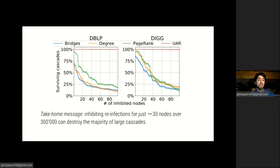And we can see here on two random graphs that our heuristics, especially for a very low budget, is nearly always the best. But the main take-home message is that we can inhibit reinfection for a very small number of nodes, just 30 nodes in a graph of 300,000 nodes. And this small number of reinfection inhibitions can destroy the majority of large cascades.